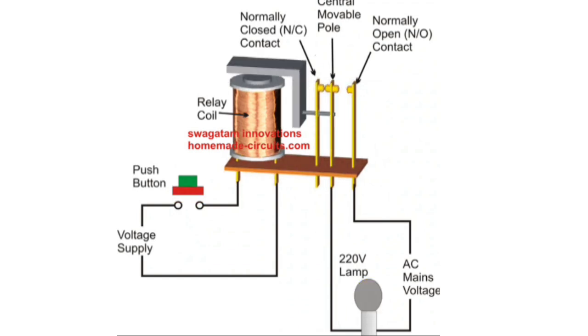Working: When the switch is turned on, the relay coil gets power and creates a magnetic field. This pulls the armature, closing the normally open contact and turning on the light.